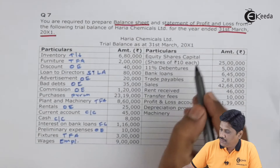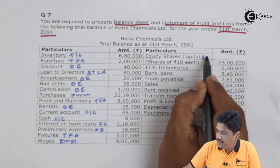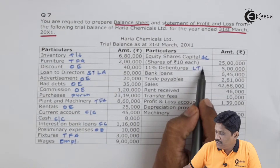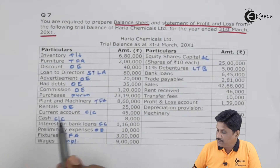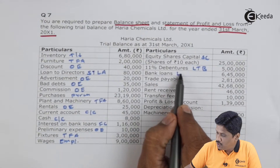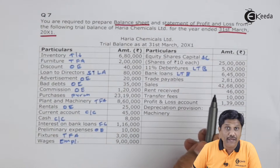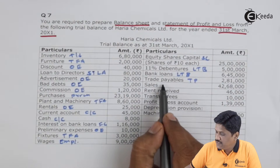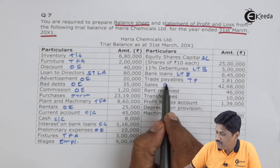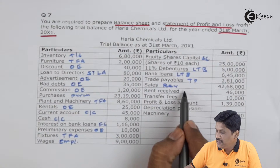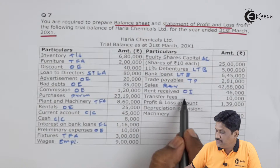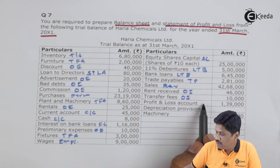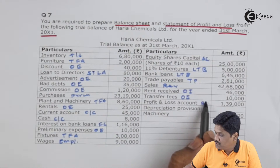Debenture interest is your finance cost. On the credit side: equity share capital will be recorded as share capital. 11% debenture is your long-term borrowing. Bank loan is also your long-term borrowing — unless otherwise given, bank loan is also long term. Trade payable is a trade payable. Sales is your revenue from operations. Rent received is your other income. Transfer fees is your other income. Profit and loss account will be recorded in reserves and surplus.